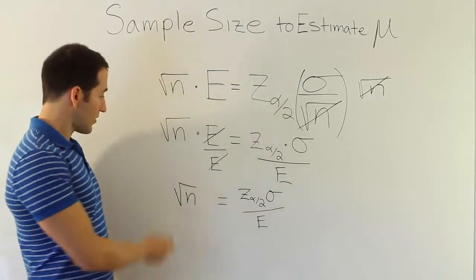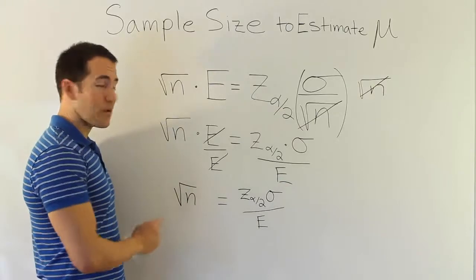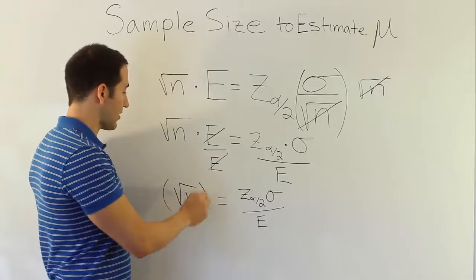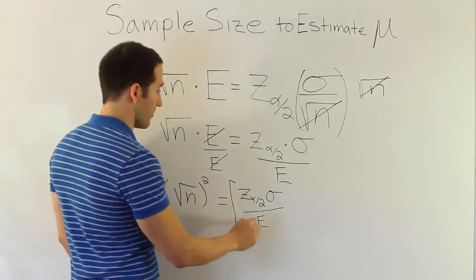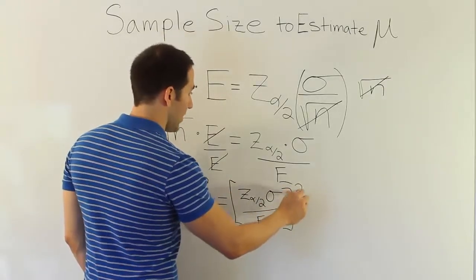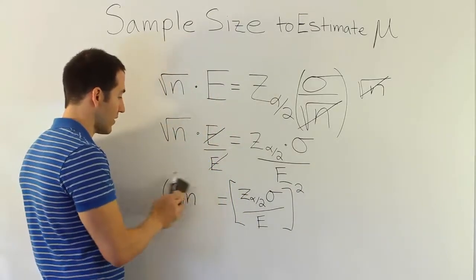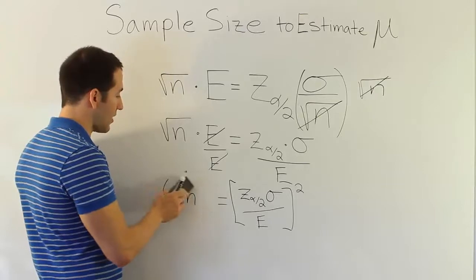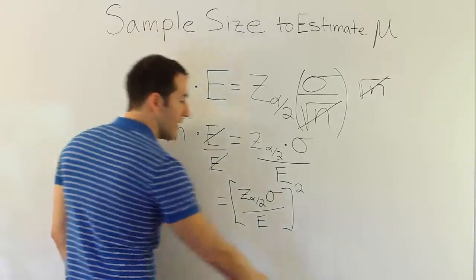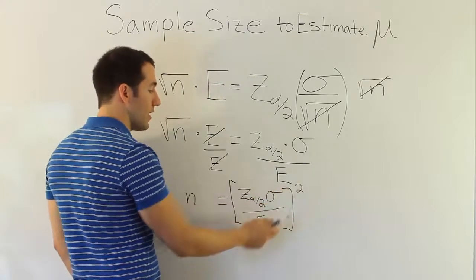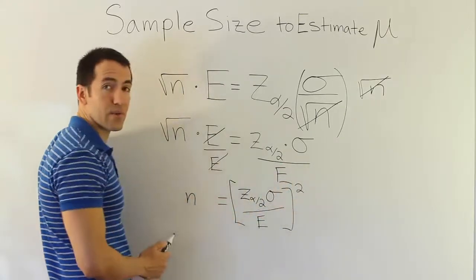And this is good, but I don't want the square root of n. I ultimately want n, right? So I'm going to square both sides to remove that square root. And when I do that, I end up with this result. Of course, the square root and the square cancel each other out. And so I finally get n alone on the left-hand side. And it's equal to z alpha divided by 2 times sigma divided by the error quantity squared.